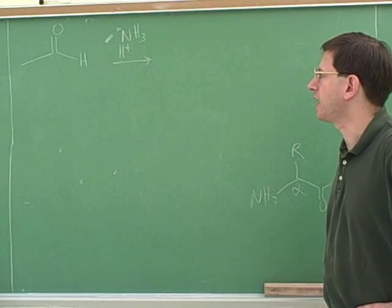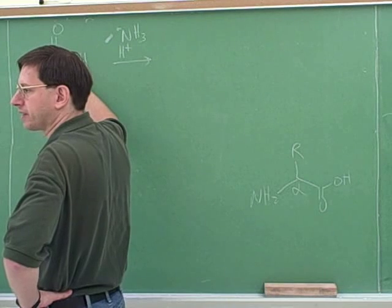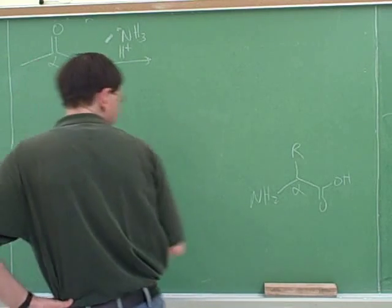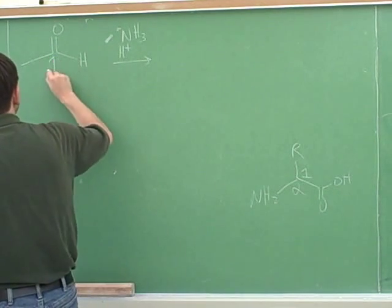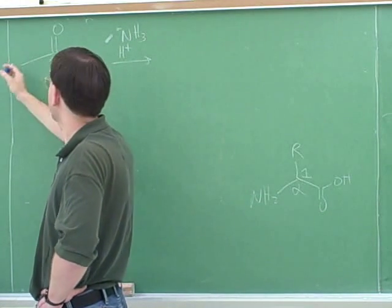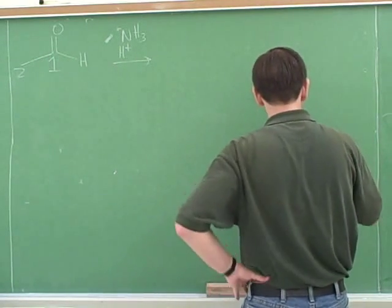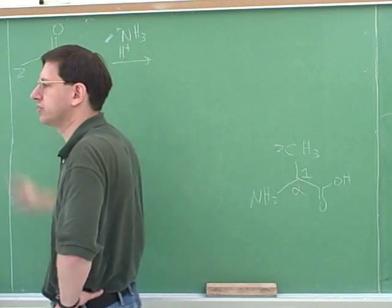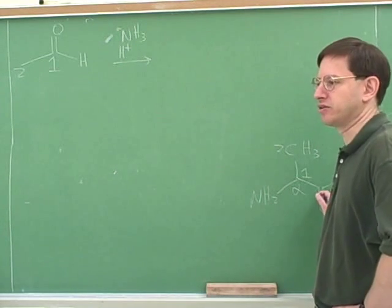So now we're going to go through a Strecker synthesis. We're going to be making this carbon into the alpha carbon. And you might label it alpha already, although that would be confusing because it's not an alpha carbon yet. But maybe I'll say it's going to be this alpha number one carbon. So this is going to be our number one carbon over here. And if this is going to be the alpha carbon, then this would be the side chain over here. So do you recognize this would be alanine, one of the simpler amino acids?